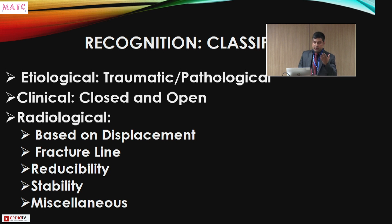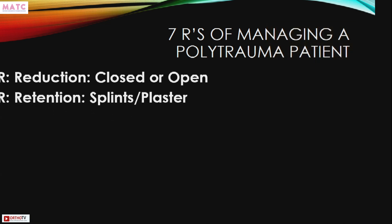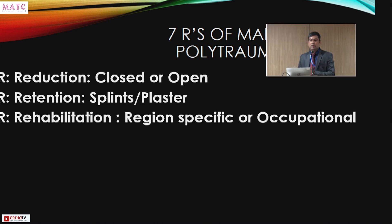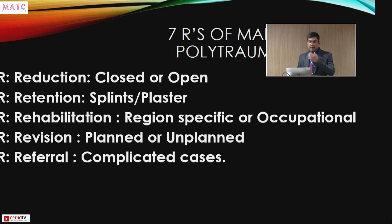Fractures are classified by etiology as traumatic, and clinically as closed or open. Radiological classification is based on displacement, fracture line pattern, reducibility, and post-reduction stability, plus miscellaneous types like torus and avulsion fractures. After recognition, we plan closed or open reduction, retention in splint, plaster, or fixation, then rehabilitation — region-specific or occupation-specific — followed by revision if needed, and referral for complicated cases.